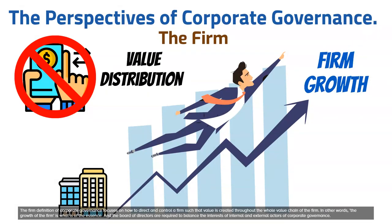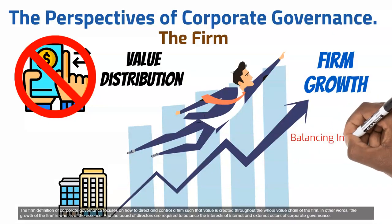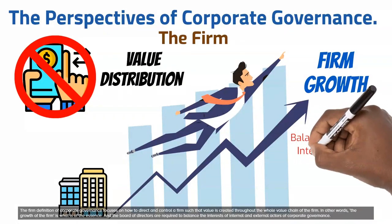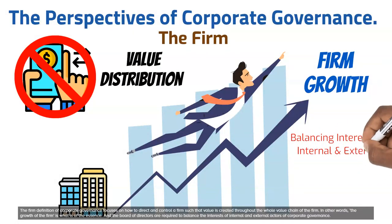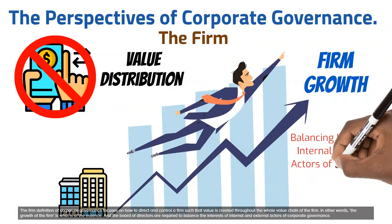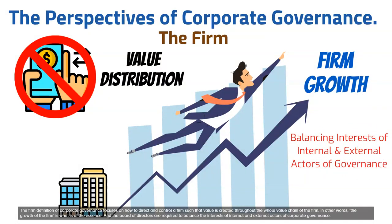The firm definition of corporate governance focuses on how to direct and control a firm such that value is created throughout the whole value chain. The growth of the firm is what is of the essence, and the board of directors are required to balance the interests of internal and external actors of corporate governance.